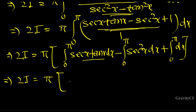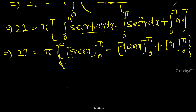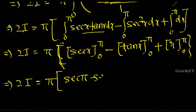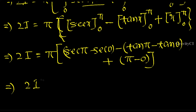The integration of sec x·tan x is sec x. So 2I equals π times [sec x - tan x + x] from 0 to π. Applying the limits: sec π minus sec 0 gives -1 - 1 equals -2, and tan π - tan 0 equals 0, and π - 0 equals π.